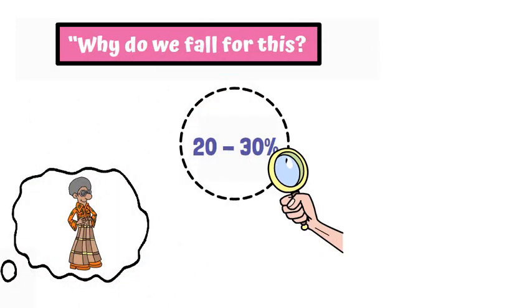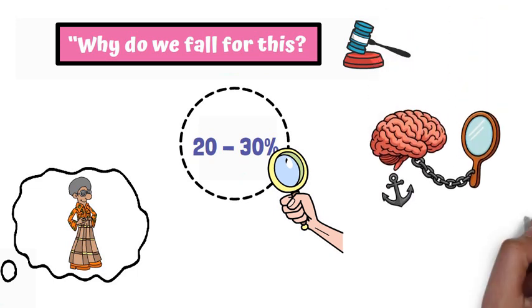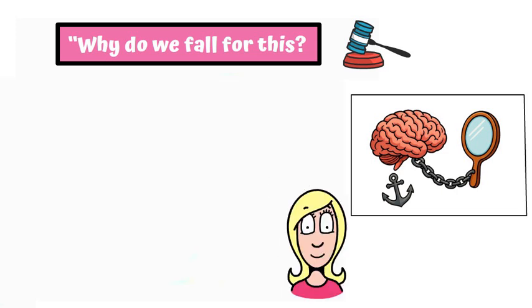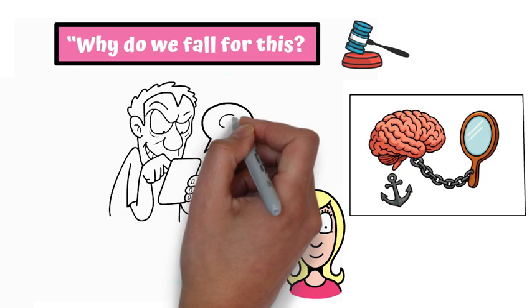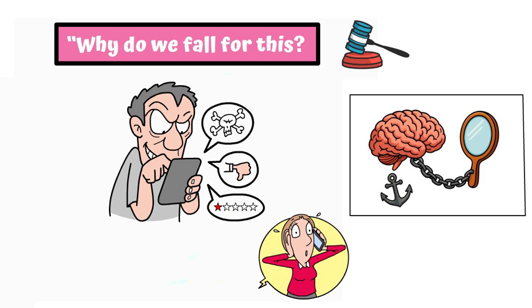Why do we fall for this? It's an egocentric bias in our social judgment. Our brains start from how do I see myself right now, anchoring on that vivid self-view, then barely adjust for how little others actually see. Evolutionarily, it might protect us from social threats, but in modern life, it just fuels unnecessary worry.